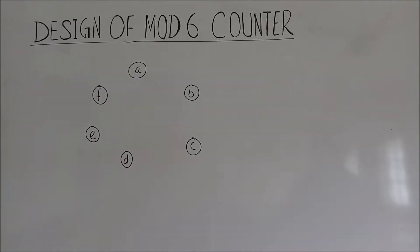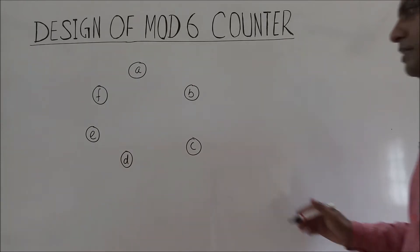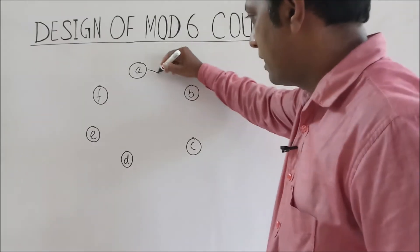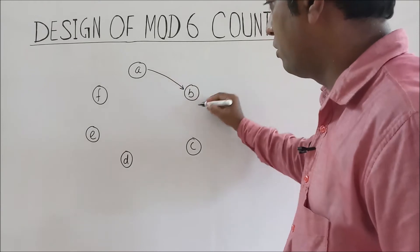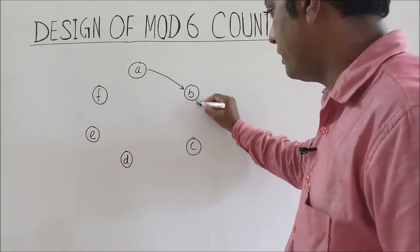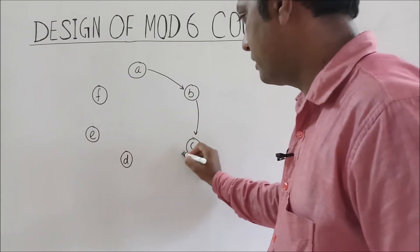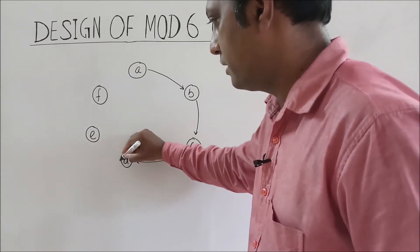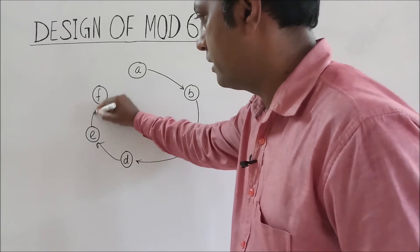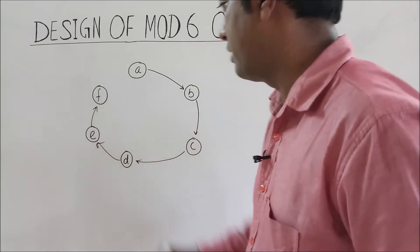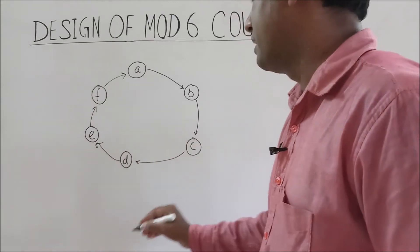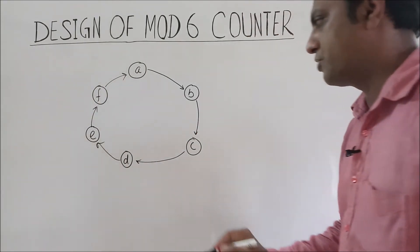Suppose the states are a, b, c, d, e, and f. The count will go from a to b, b to c, c to d, d to e, e to f, and then f back to a. This is the state diagram.